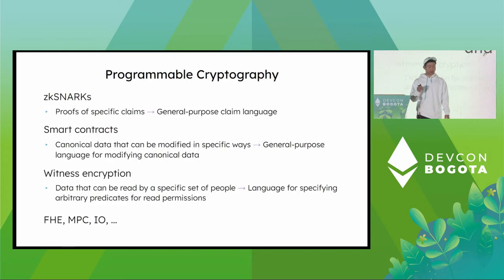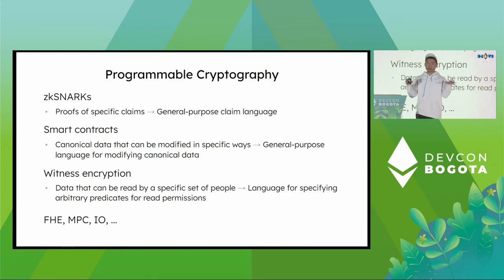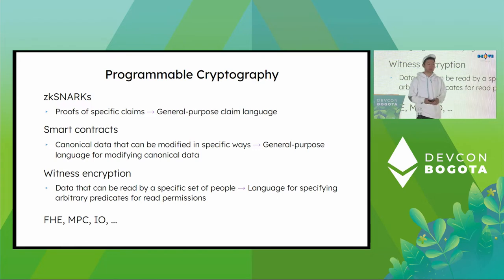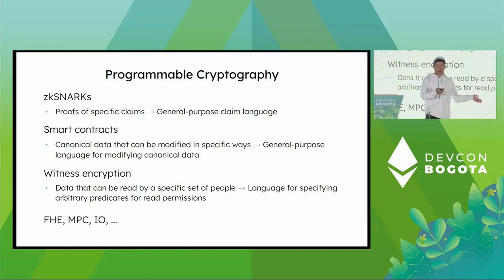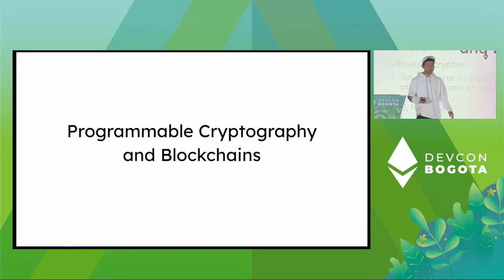In each of these examples there's a common theme of moving from the specific to the general. With ZK-SNARKs, I can move from proofs of specific claims to a general-purpose language of claims. Smart contracts let us move from consensus on data that can be modified in only narrow ways to a general-purpose language for executing code on canonical data. Witness encryption moves us from permissioning data to only a specific person to having a language for specifying arbitrary predicates for read permissions — like decentralized OAuth tokens where anyone can specify who can read what and when. And there are new primitives continually getting better: fully homomorphic encryption, multi-party computation, indistinguishability obfuscation, and more. The Searcy team calls these computational cryptosystems — very similar in spirit to what we call programmable cryptography.